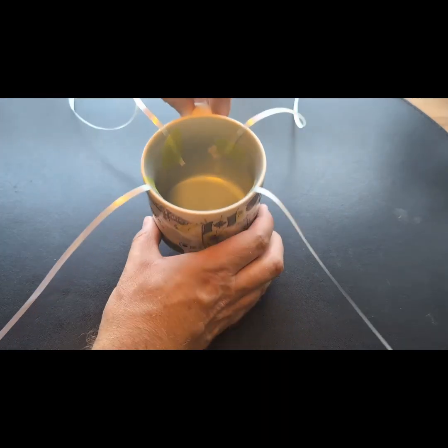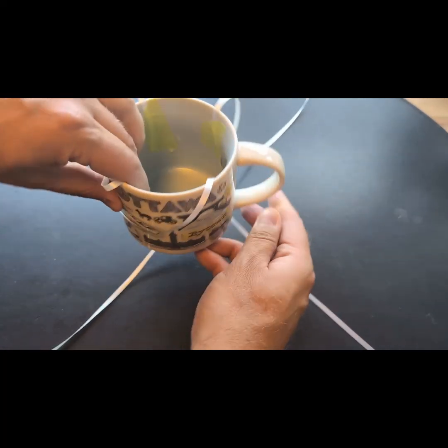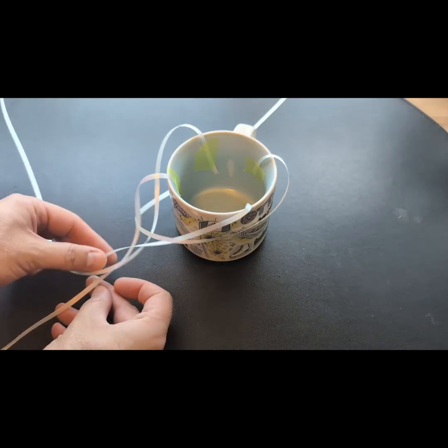We begin with an odd experiment. Take an object and attach strings to it. Now give it one full 360 degree turn. The strings twist around.